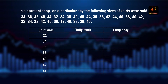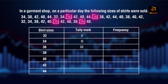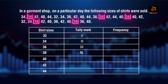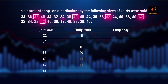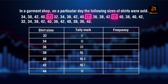We will write the corresponding tally marks for each size. The frequencies for each shirt size are: size 32 has 2, size 34 has 3, size 36 has 4, size 38 has 5, size 40 has 7, size 42 has 6, and size 44 has 3.